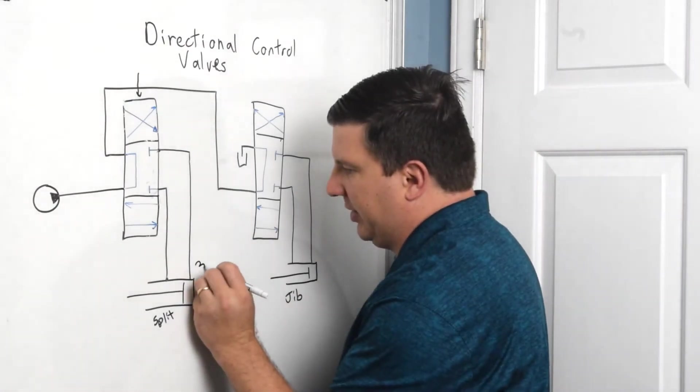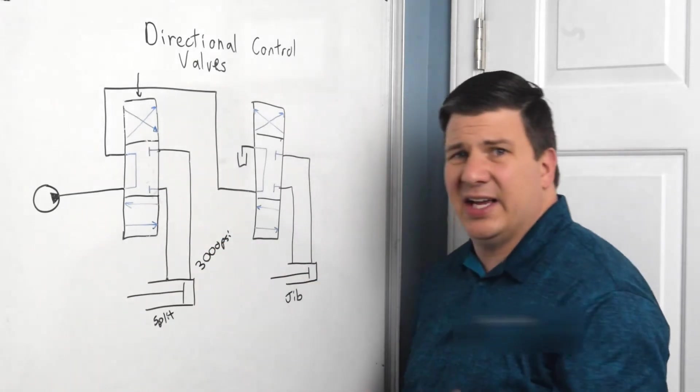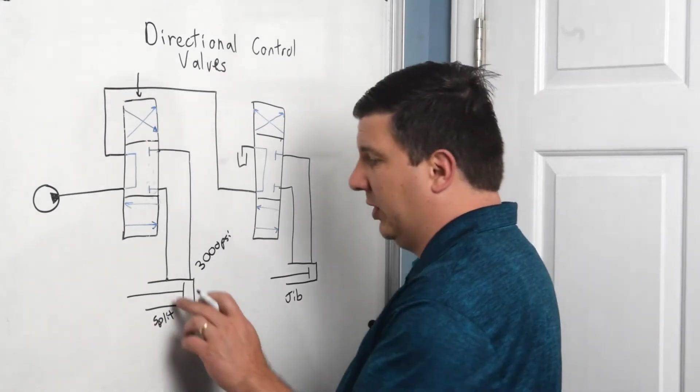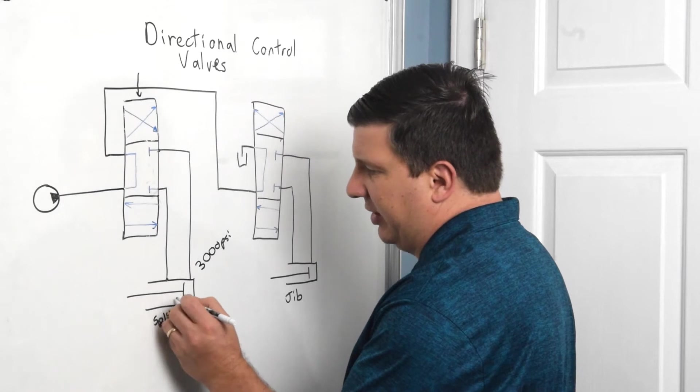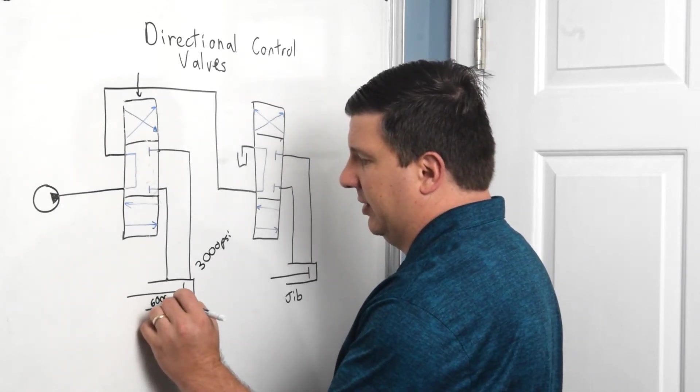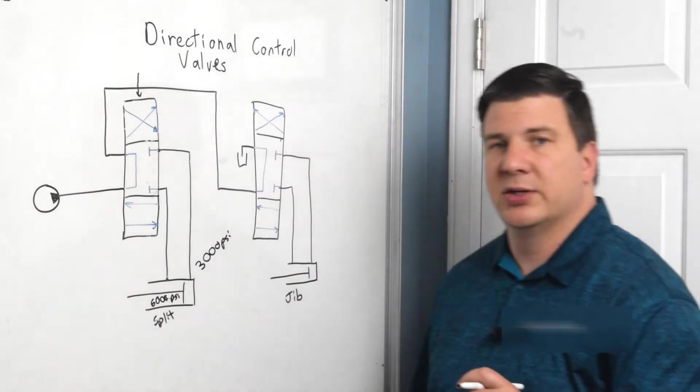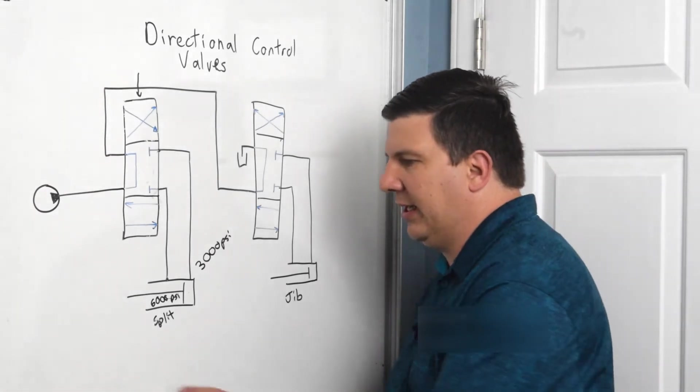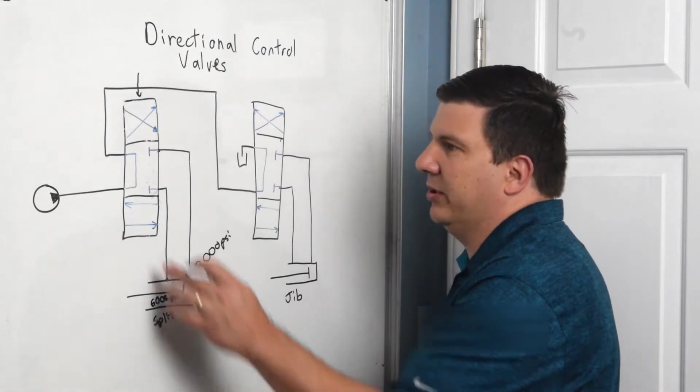And let's say I have 3000 PSI, right? And I have a two to one ratio on this cylinder. So that means 3000 PSI on there. And I'm actually getting 6000 PSI here to stall out the cylinder. So I have the potential. It doesn't mean I'm doing it, right? Cause this theoretically is going back to tank.